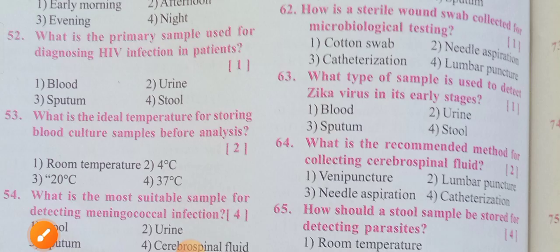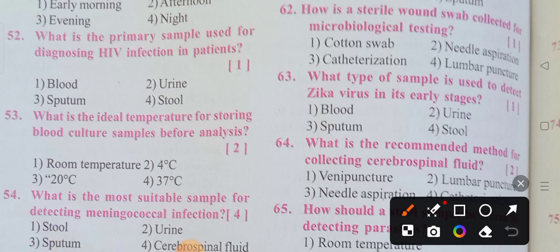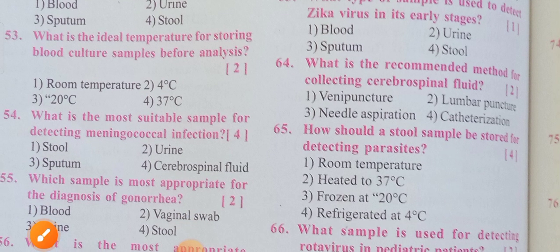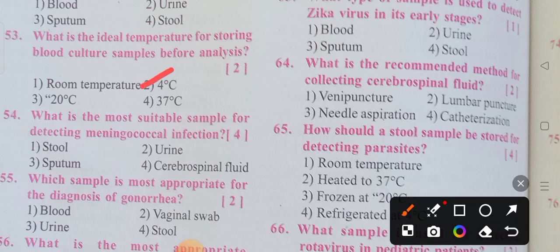What is the primary sample used for diagnosing HIV infection? Moving on to blood sample storage before analysis — the ideal temperature for storing blood samples before culture analysis. Option 2 is correct: 4 degrees centigrade. 4 degrees centigrade is the ideal temperature for storing blood cultures.